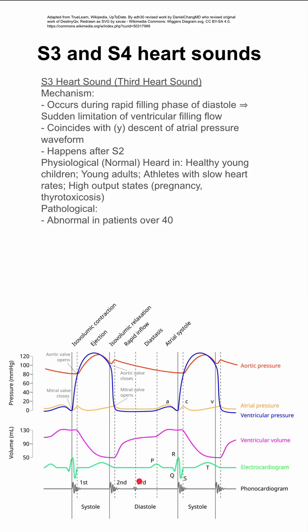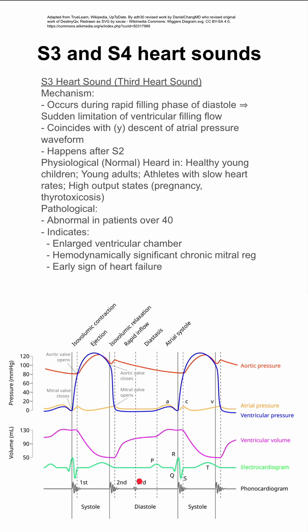There are pathologic reasons to have an S3 as well. It's abnormal in any patient over the age of 40, and it indicates an enlarged ventricular chamber, hemodynamically significant chronic mitral regurgitation, or is an early sign of heart failure or dilated cardiomyopathy.